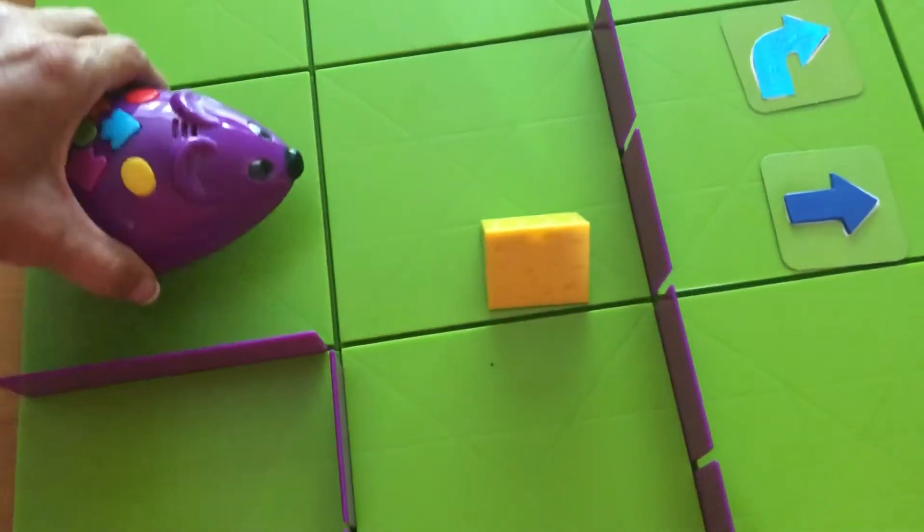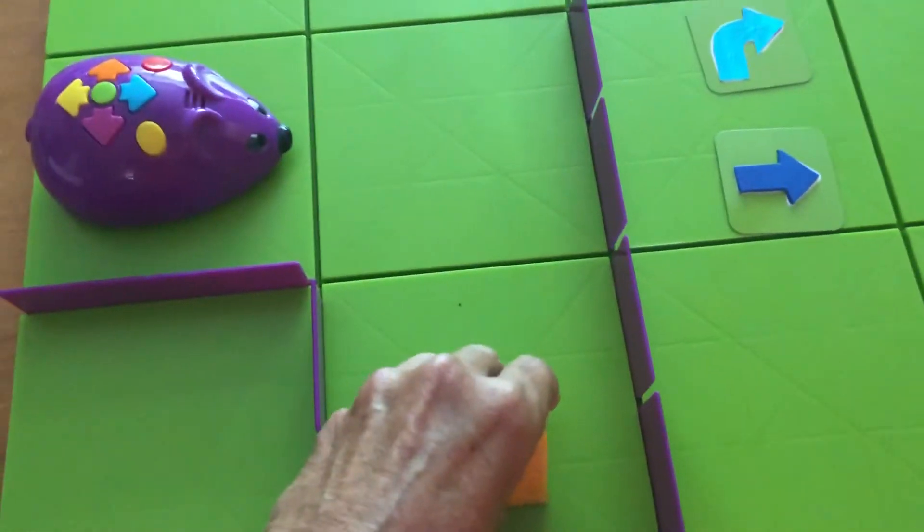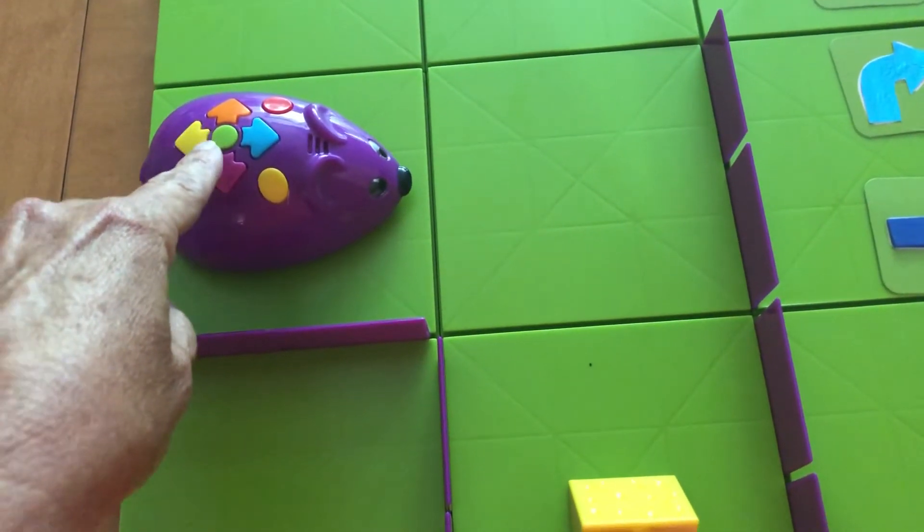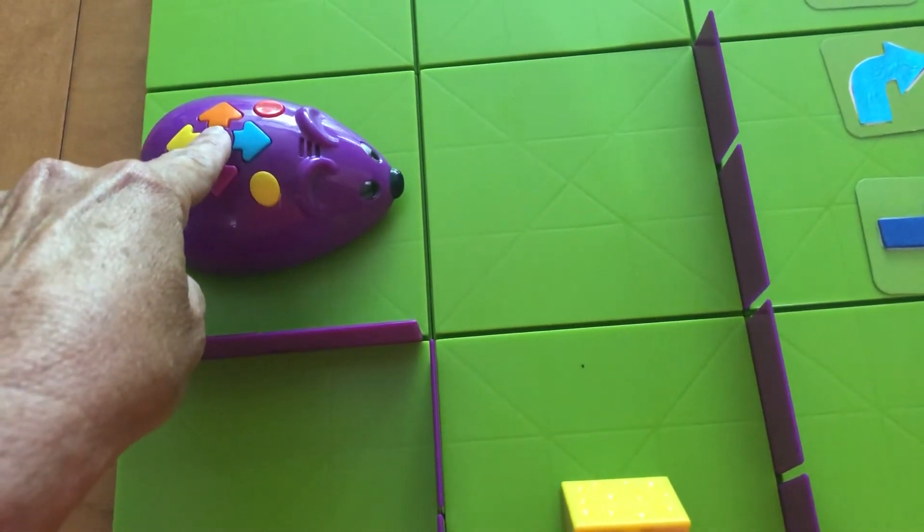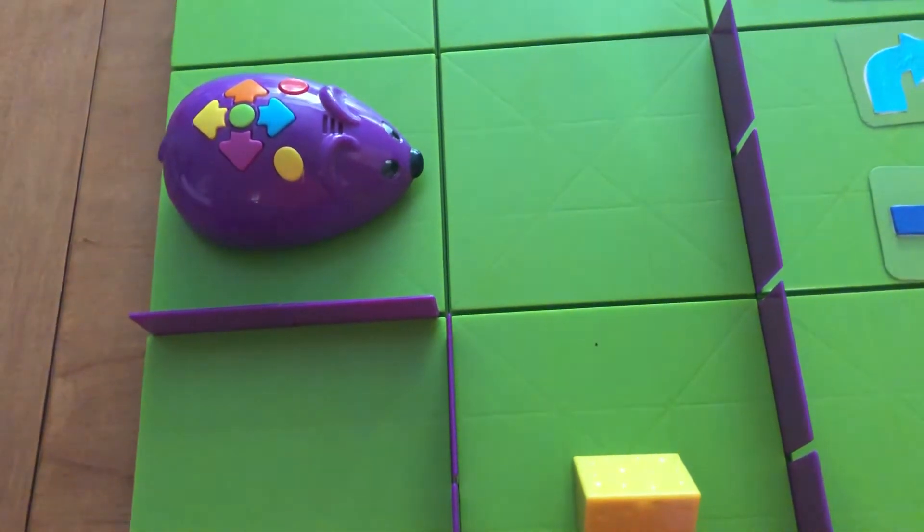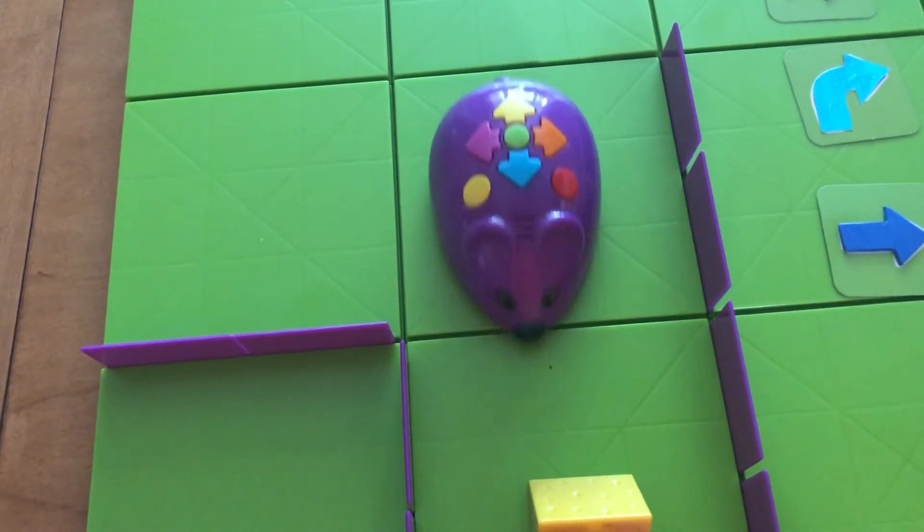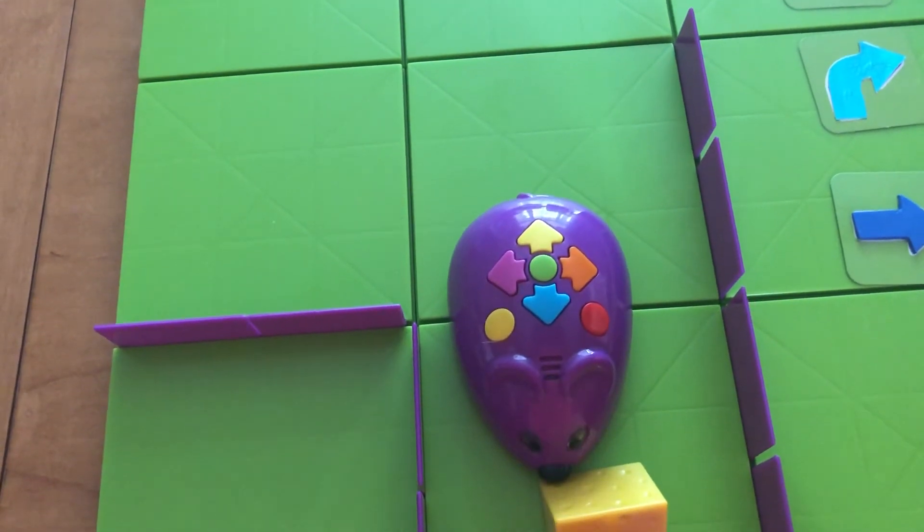So let's take a look again. I'm going to move my cheese in the same square. I'm going to start my mouse in the same square. So I'm just going to press the go button in the center of the arrows. There we go.